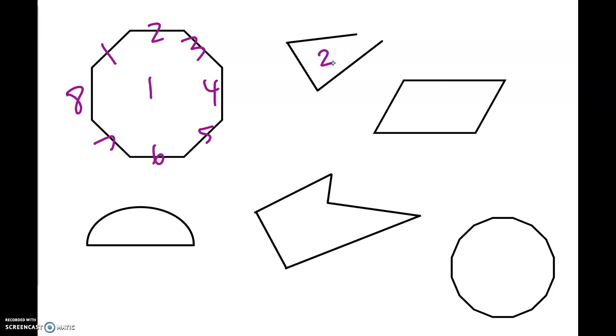Alright. The second figure right here, is this a polygon? And no, it is not because it is not closed. Number three here, is this a polygon? Yes, it is a polygon because it is closed. It's got one, two, three, four sides. So a four sided figure is a quadrilateral and this one is convex.